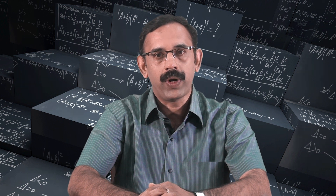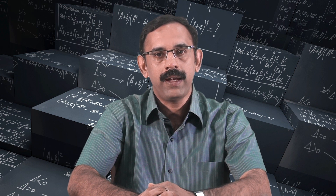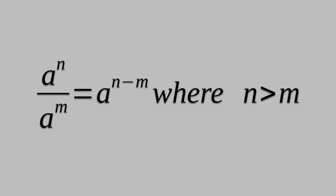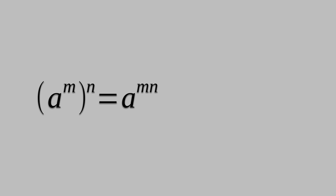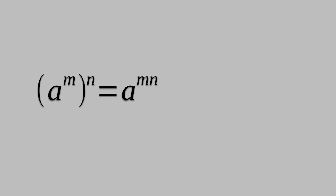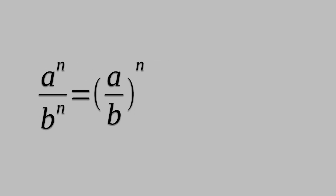In a similar way, we can verify the following laws of exponents where a and b are non-zero integers and m and n are any integers: a raised to n divided by a raised to m is equal to a raised to n minus m; a raised to m whole raised to n is equal to a raised to mn; a raised to n times b raised to n is equal to ab whole raised to n; and a raised to n divided by b raised to n is equal to a by b whole raised to n.